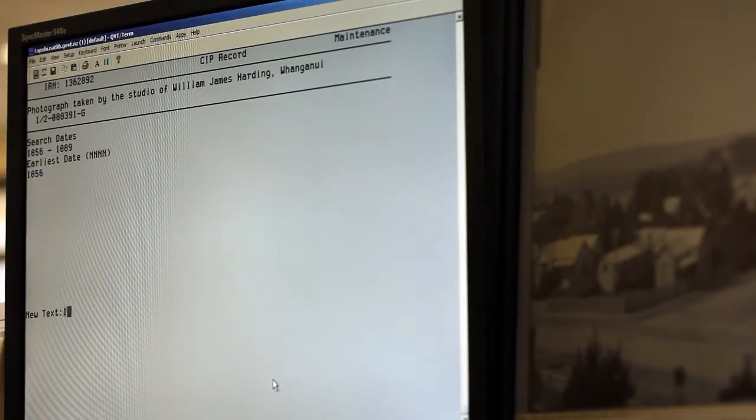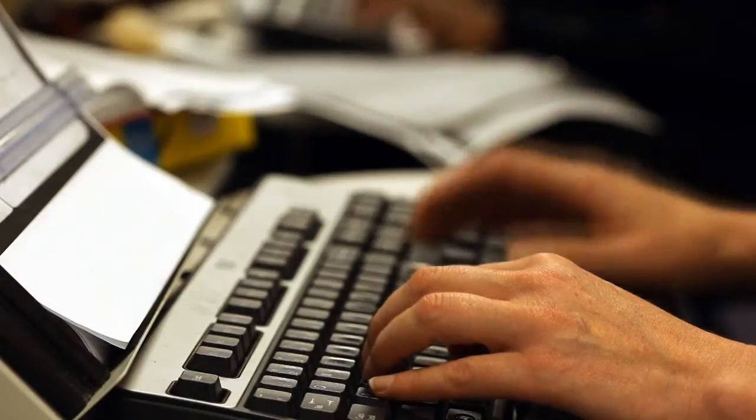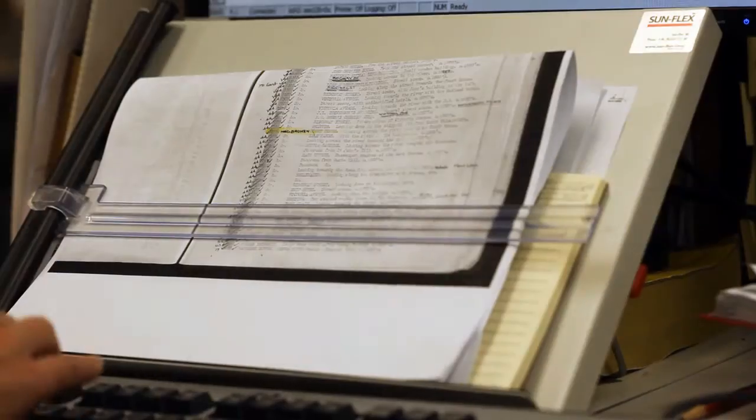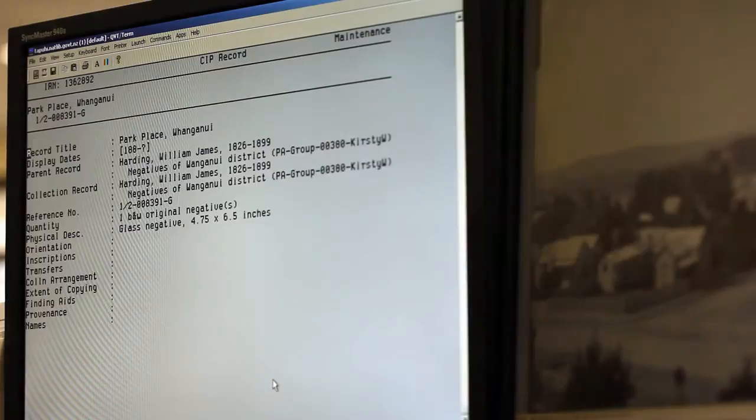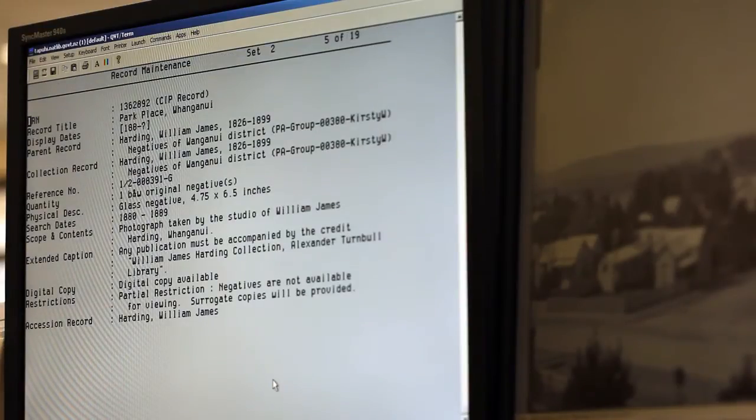A brief description and date is added using information from the images, details recorded on the original negative sleeves and in the negative registers. Staff think about the end user and use keywords to make the images discoverable.